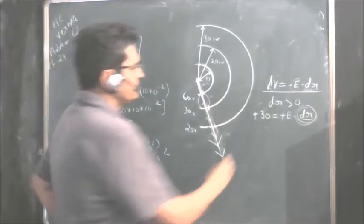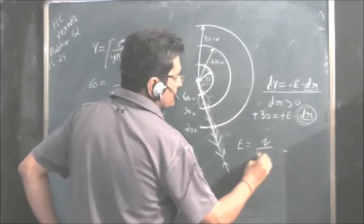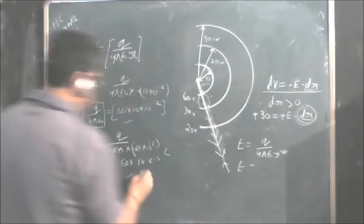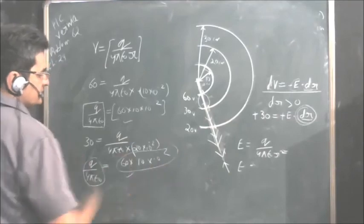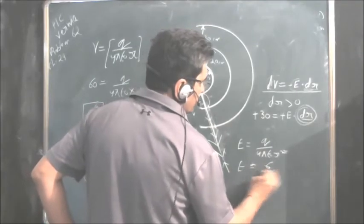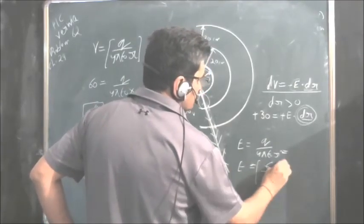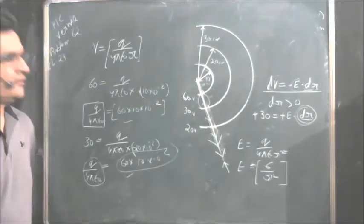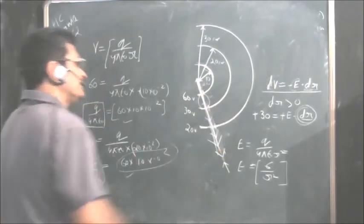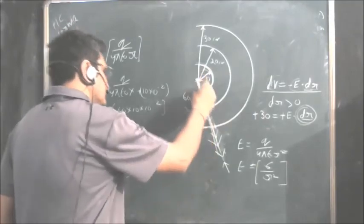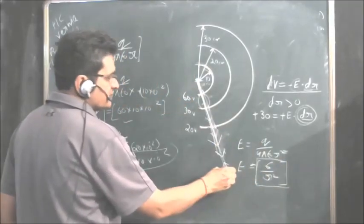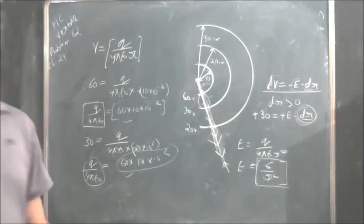Now what is the electric field due to the point charge? E equals Q upon 4πε₀R square. We have found this value Q upon 4πε₀ which is nothing but 6, so 6 upon R square. This is the value of the electric field. Electric field is perpendicular to the concentric equipotential surfaces, it is directed outwards, but it is decreasing as you move outwards. Direction remains the same but its magnitude is decreasing outwards.